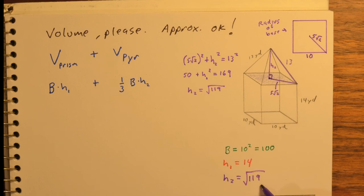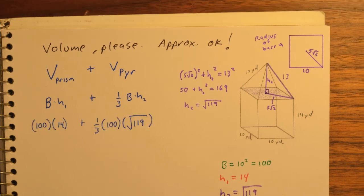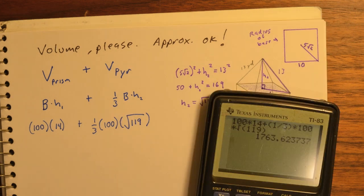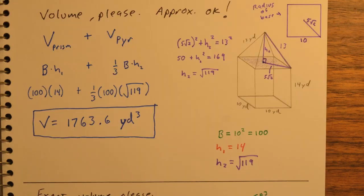Now we can find the height of the pyramid using the Pythagorean theorem. Now we have all the information we need for our calculation. For this one, since approximation is okay, I'm going to pull out the calculator, and I get about 1,763.6 cubic yards.